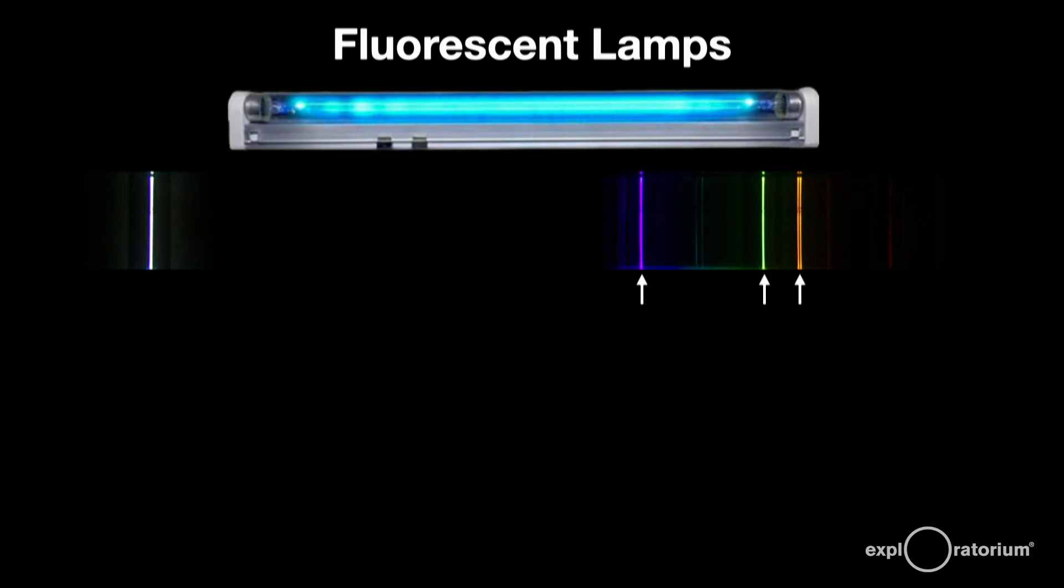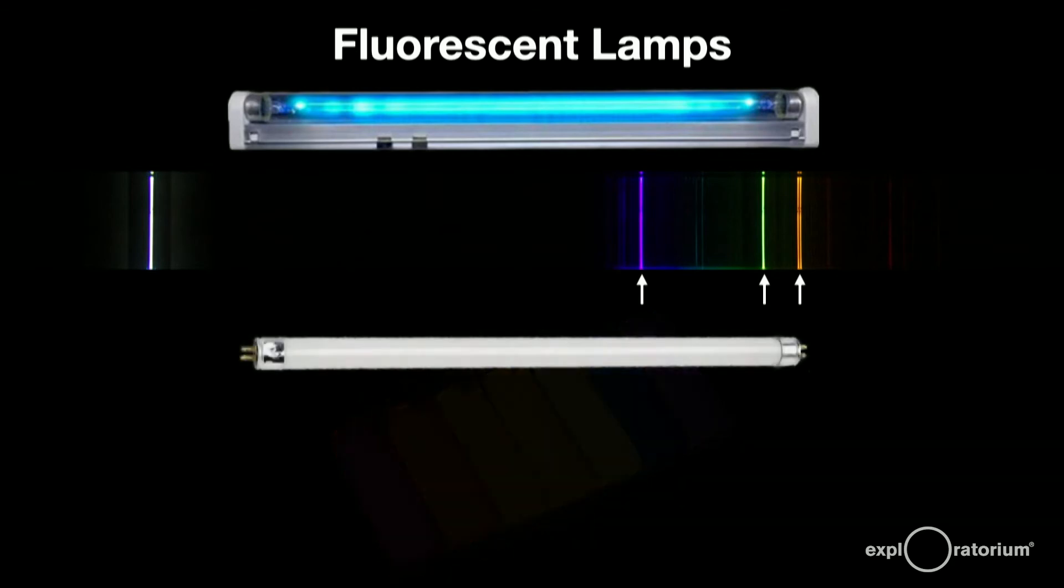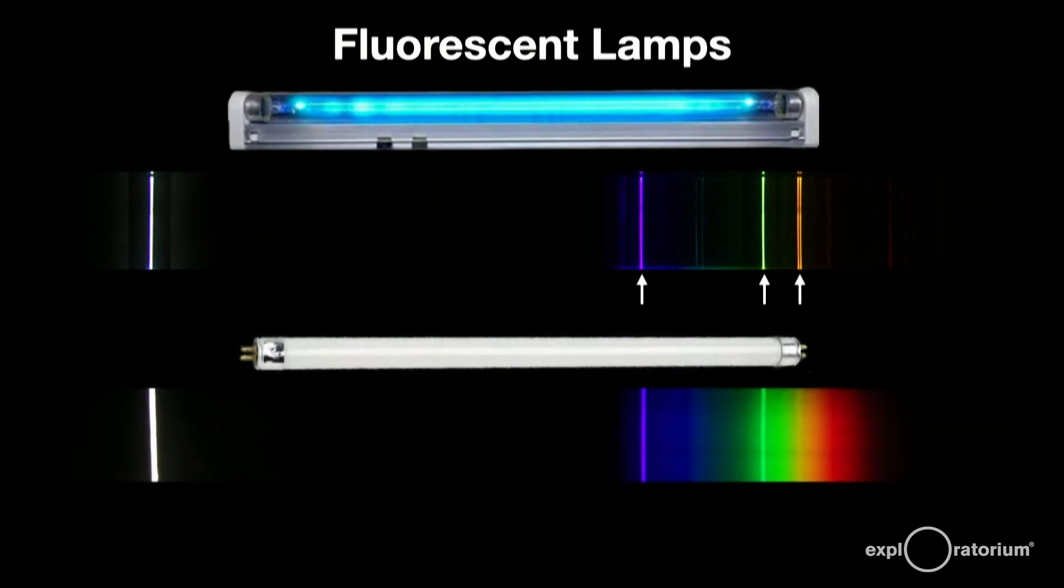The powders on the inside surface of a regular fluorescent tube is a combination of phosphors like these. They glow when hit by the ultraviolet light of the excited mercury. The colors of the phosphors produce and combine to make the white light of the lamp. If you look at its spectrum, you'd still see the yellow, green, and violet light from mercury, but also the light from the phosphors that fill in the spectrum to make white light.